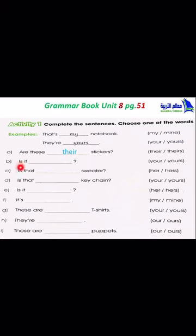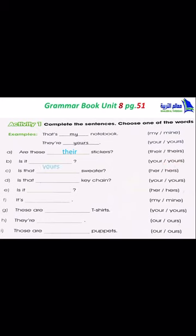B: Is that ___ ? Your or yours? There is no noun after the space, so we choose the pronoun. The answer is 'yours'. C: Is that ___ sweater? Her or hers? There is a noun after the space, so we choose the adjective. The adjective is 'her'. Her sweater.